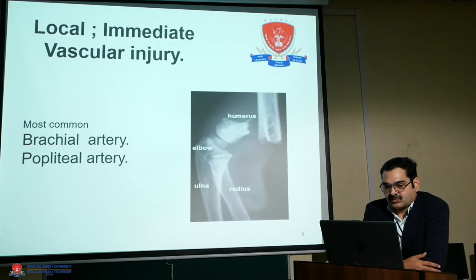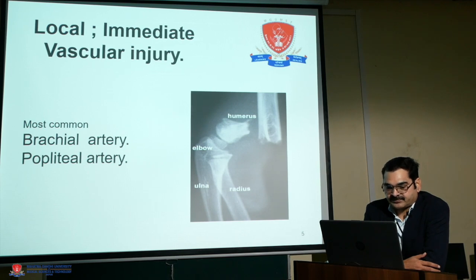For vascular injury, the most common is brachial artery injury in supracondylar fractures of the humerus. Popliteal artery is injured in proximal tibial fractures.